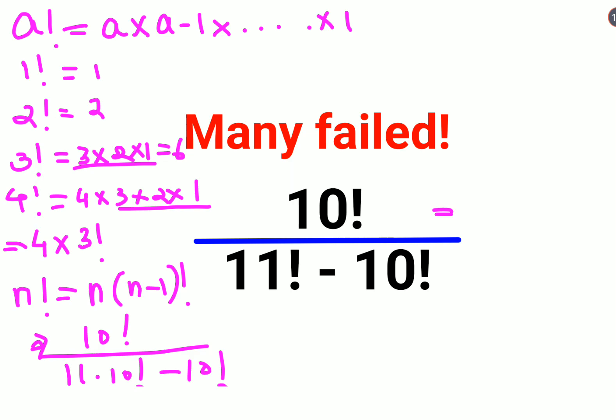So now I can take the 10 factorial outside in your denominator. I can take 10 factorial outside and I am left with just 11 minus 1. So now if you look closely this and this is cancelled.